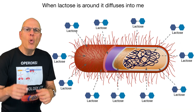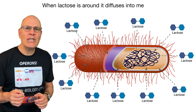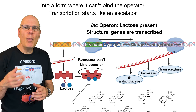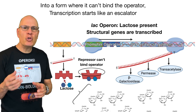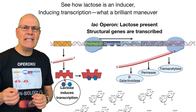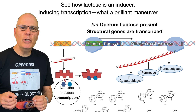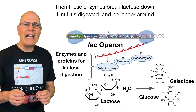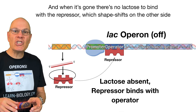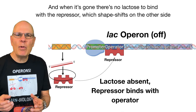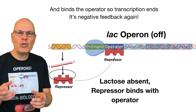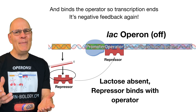When lactose is around, it diffuses into me and binds with the repressor, which shifts beautifully into a form where it can't find the operator. Transcription starts like an escalator. See how lactose is an inducer — inducing transcription, what a brilliant maneuver. Then these enzymes break lactose down until it's digested and no longer around. And when it's gone, there's no lactose to bind with the repressor, which shapeshifts and binds the operator so transcription ends. It's negative feedback again.